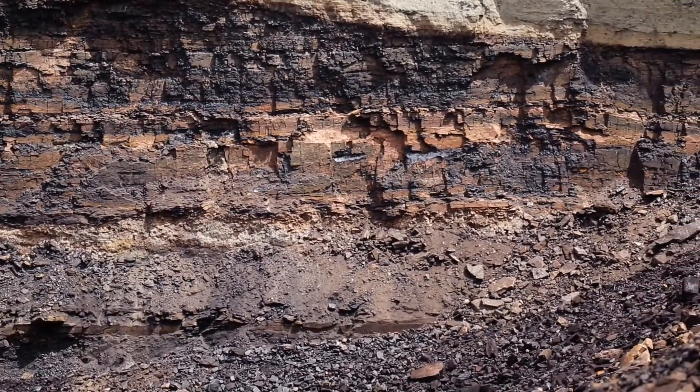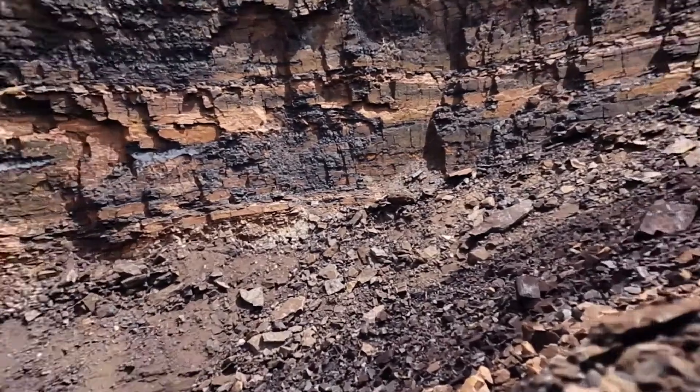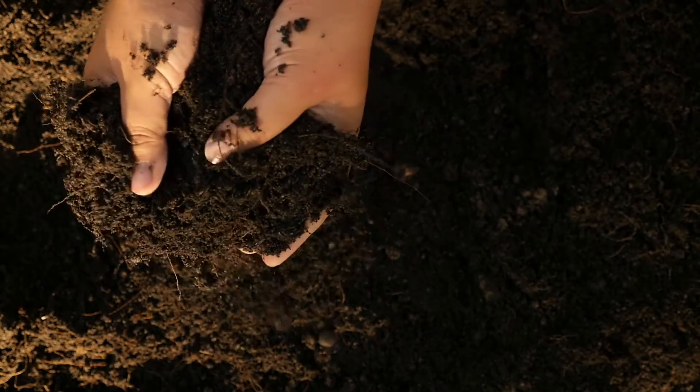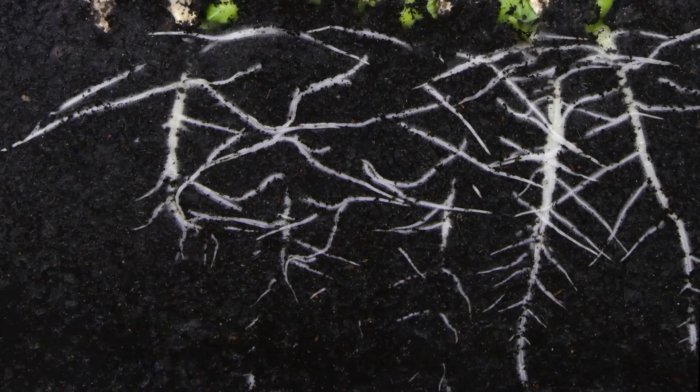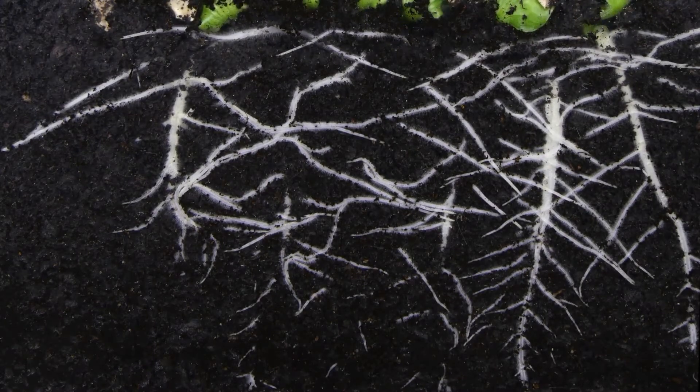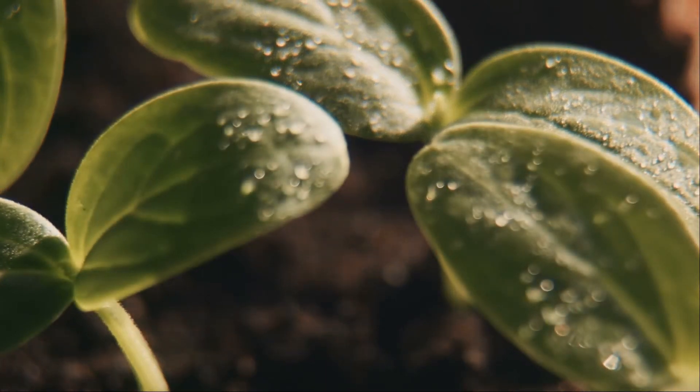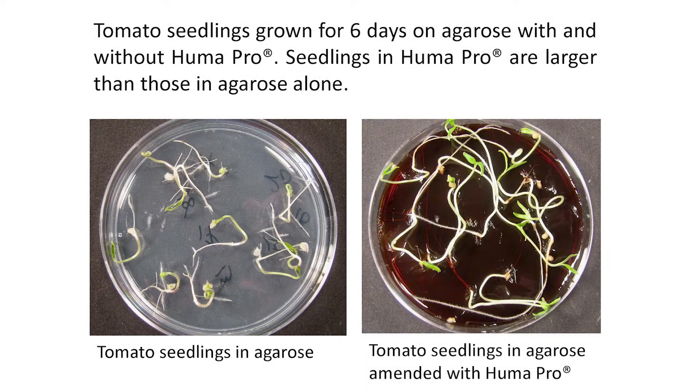In the video, you can see the stratified layers of humic acid source material at our New Mexico mine. It's documented that humans have been using humic acids to aid plant growth for over 500 years. Modern science has shown that when they are applied to agricultural soil, humic acids can improve root mass and growth, enhance nutrient availability and uptake, and result in higher crop yield and quality. On screen, you can see the results of a Rutgers University study showing tomato seedlings growing without and with Humapro.